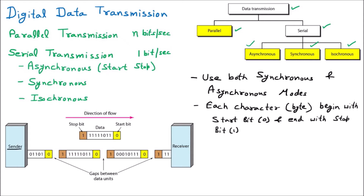Assume there is a sender and a receiver. The message — called data — has a start bit of zero and a stop bit of one. When sending data, we first send zero so the receiver knows data is coming, then the data is received, and afterward we send one so the receiver knows the data is over. So the pattern is: start bit, data, stop bit — and this repeats for each subsequent character being transmitted.